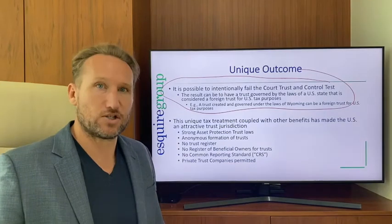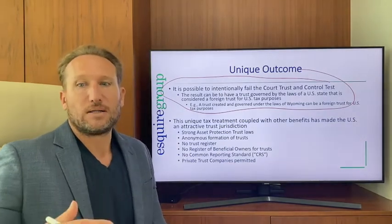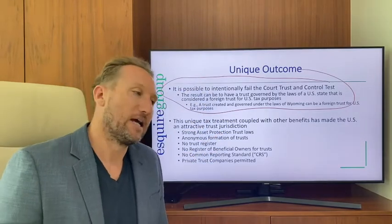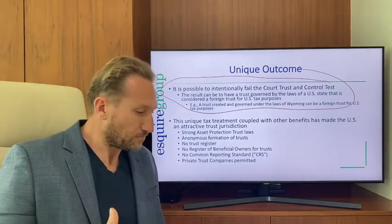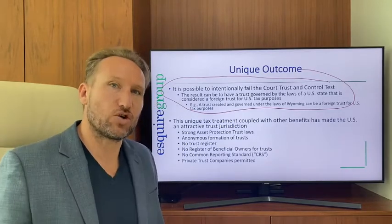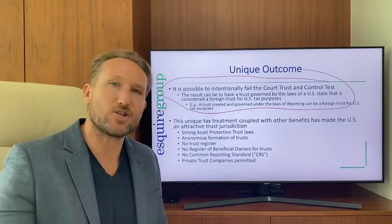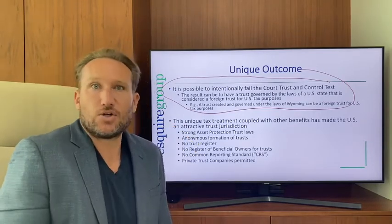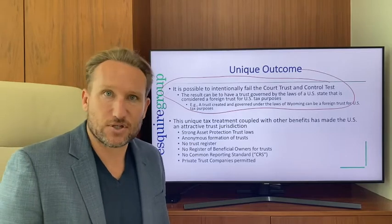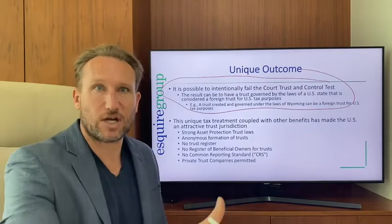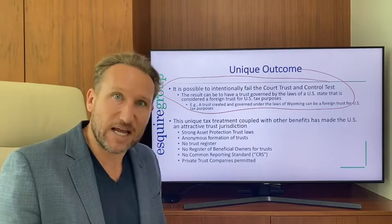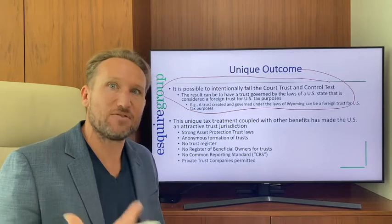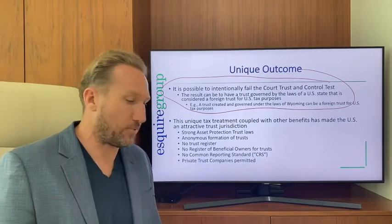You also have no trust register in the U.S. — there's no public registry where trusts are listed. You can form these trusts completely anonymously. Trusts are private documents between the trustee and the settler, with usually just two or three copies: the lawyer who drafted it, the trustee, and the settler. Not even the U.S. government knows these trusts exist. That anonymity and privacy is amazing.